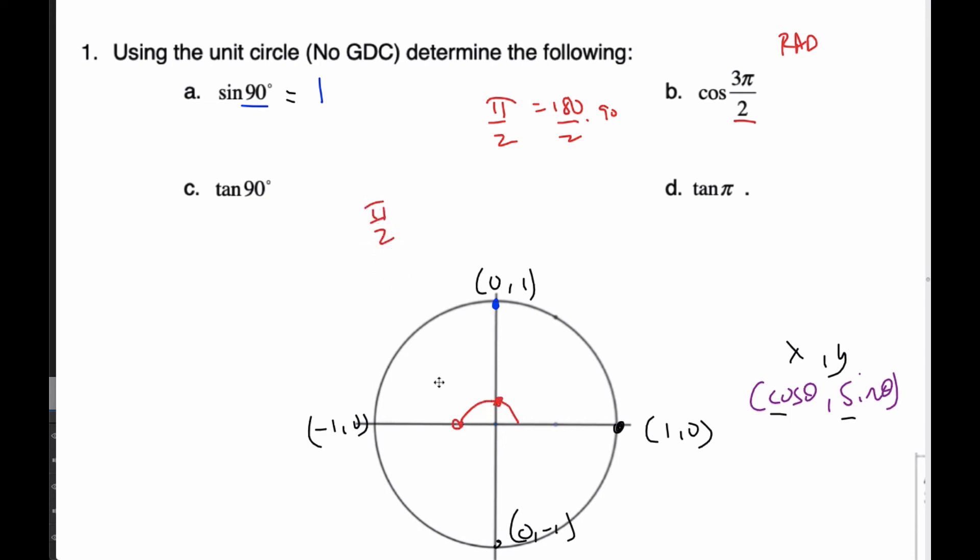This then is going to be 2π by 2s, which is 1π. And so then this one here is 3π by 2s. And so 3π by 2 is the same as 270. The cosine, my cosine is the X value. And so the X here is 0. And so cosine 3π by 2 is 0.